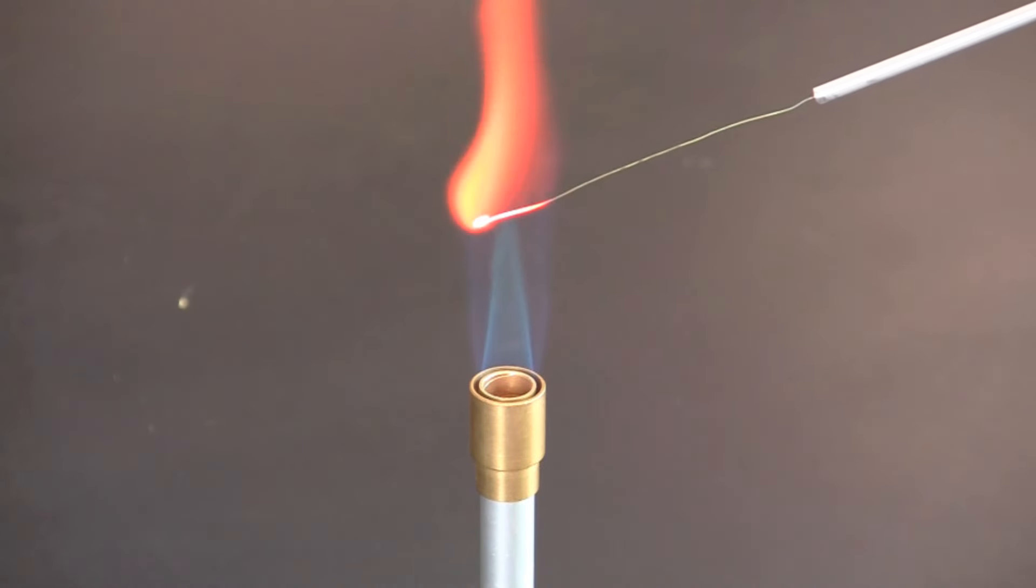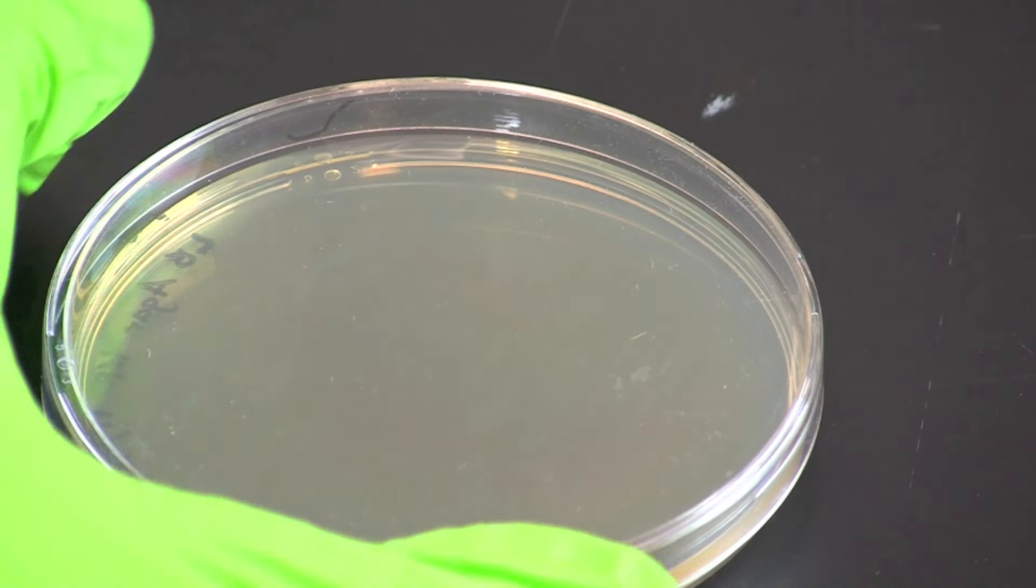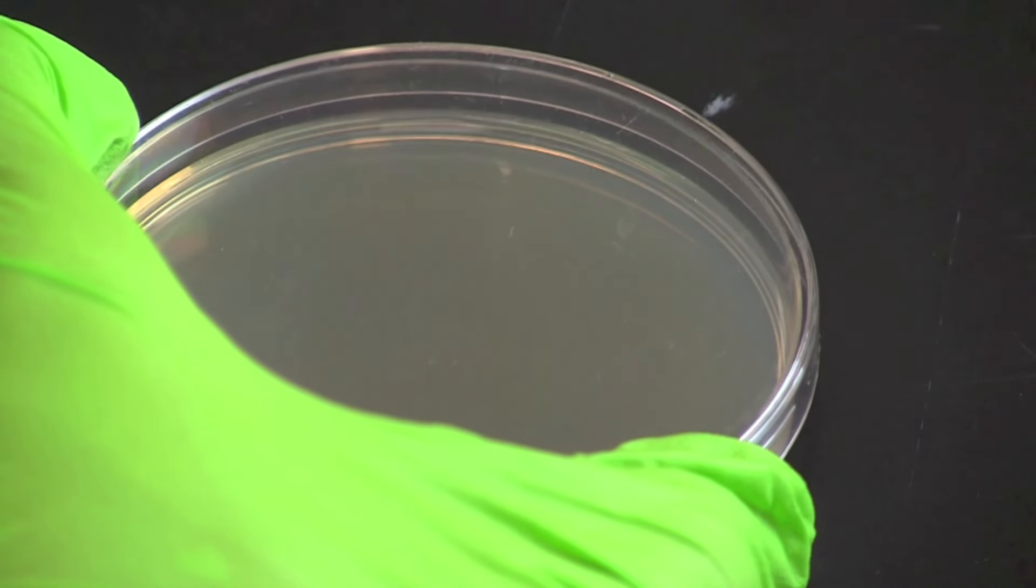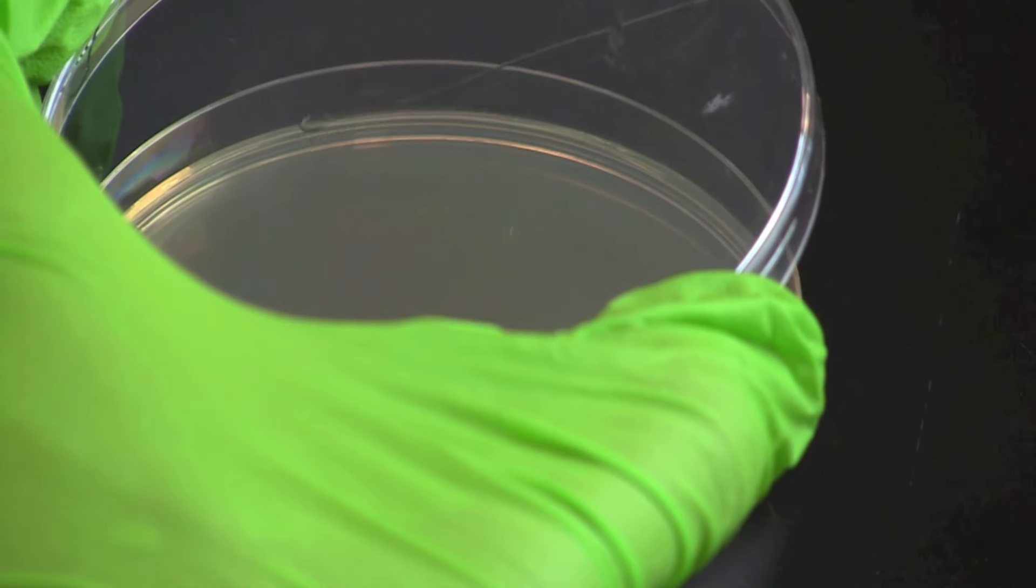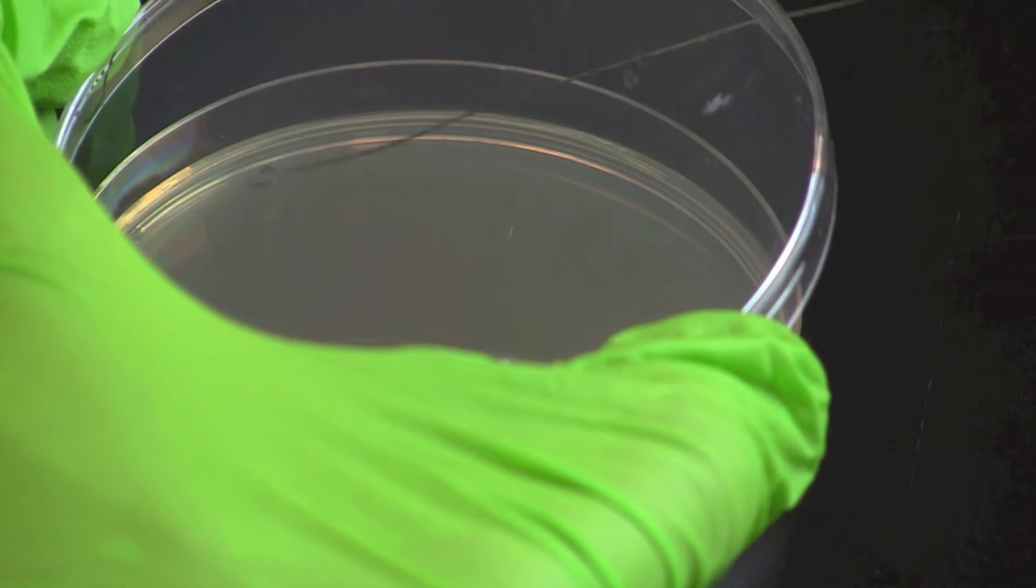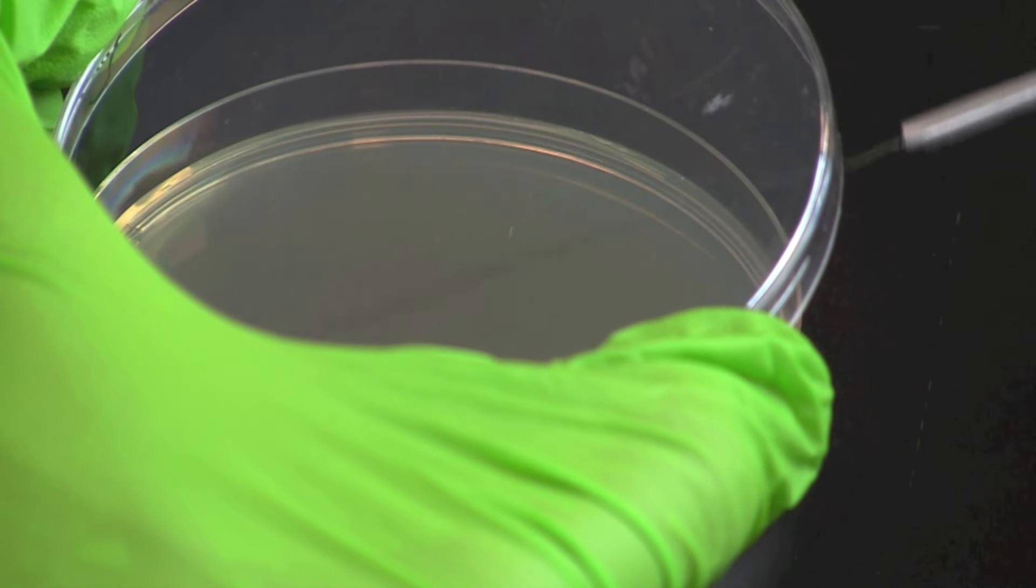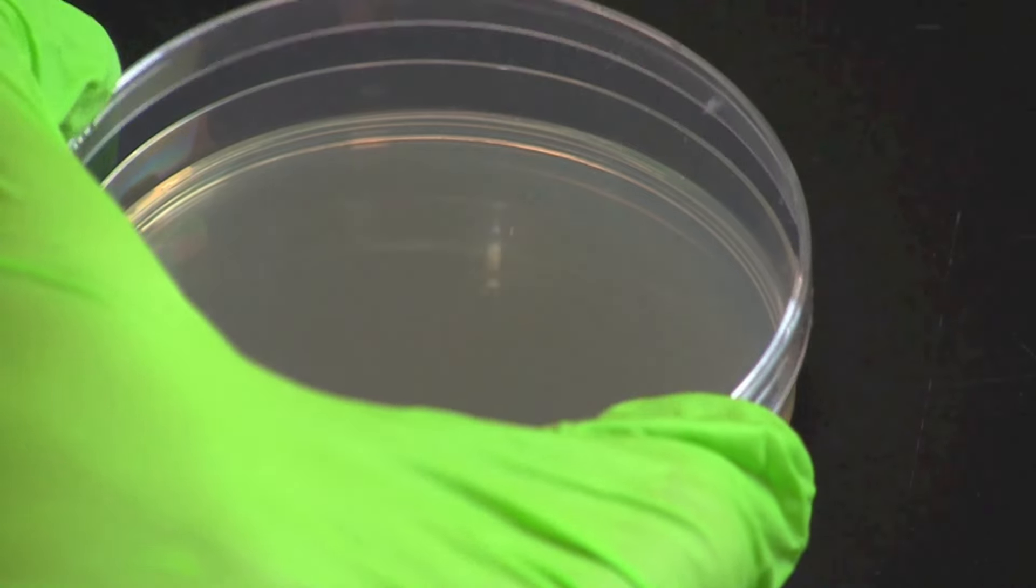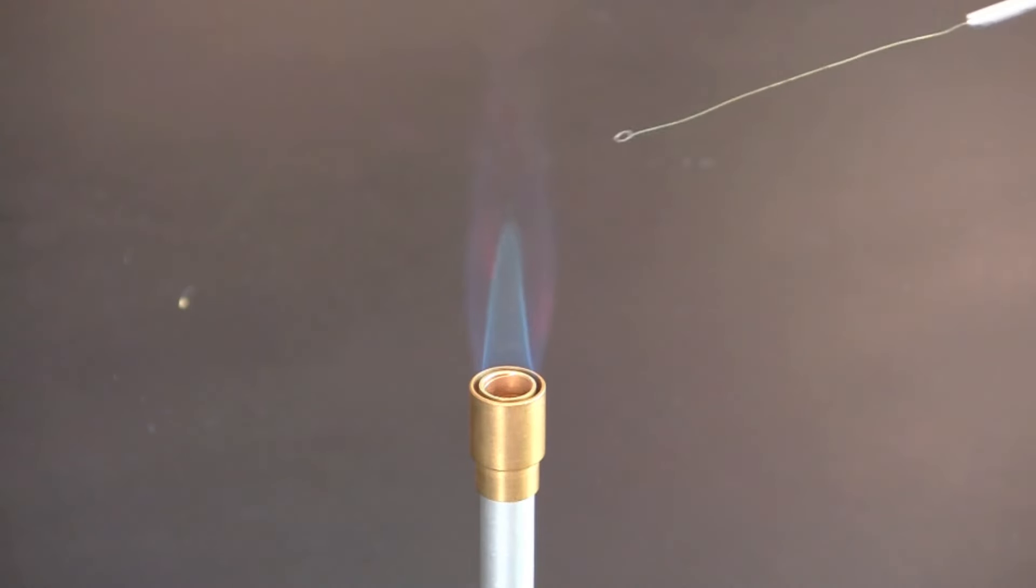When finished, flame the loop. Rotate the plate 45 degrees or a quarter turn and draw the loop through one end of the first streak and rub back and forth in the second quadrant about 10 times. Flame the loop again to sterilize.